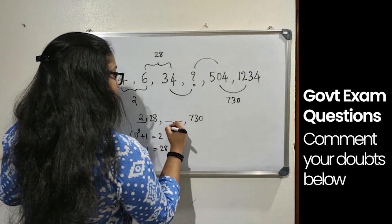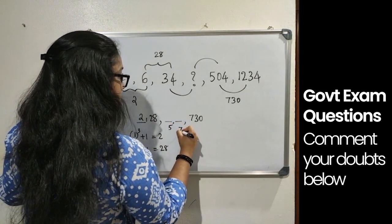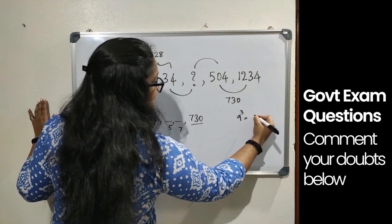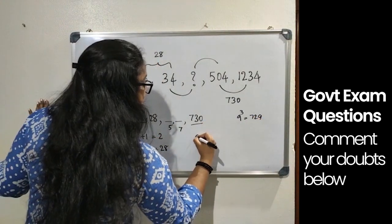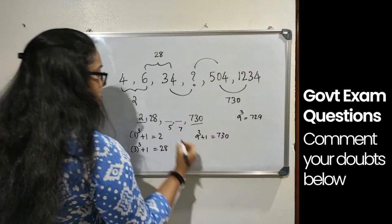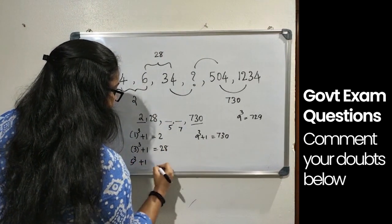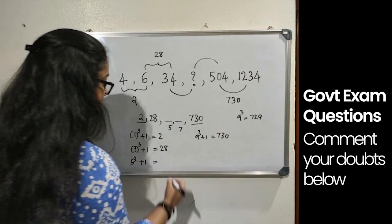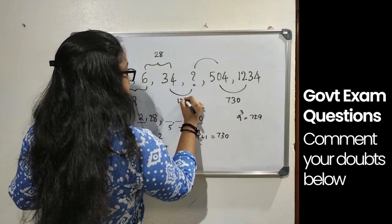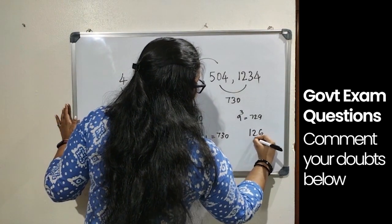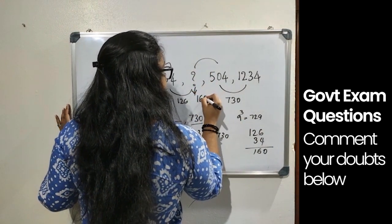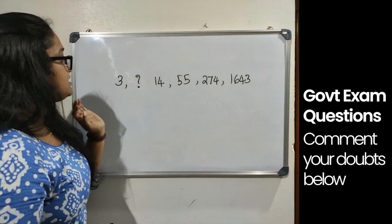So the pattern is: 1³+1, 3³+1, 5³+1, 7³+1, 9³+1. The next missing difference is 5³ + 1 = 125 + 1 = 126. Therefore, the missing term equals 34 + 126, which is 160.